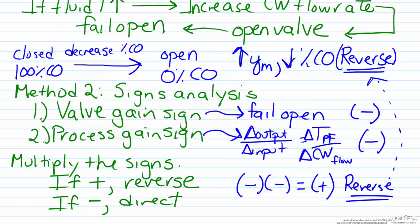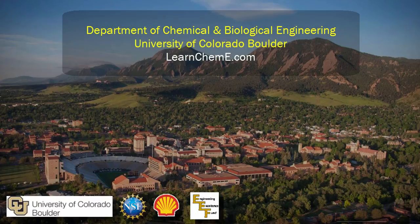In this screencast, we analyzed the importance of controller action and how to determine the controller action for a chemical process that is undergoing feedback control. But as noted earlier, this can be extended to other control schemes that are more complicated such as cascade, feedback, feedforward, etc.